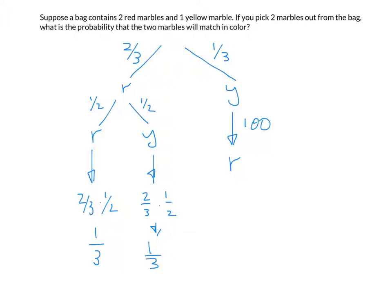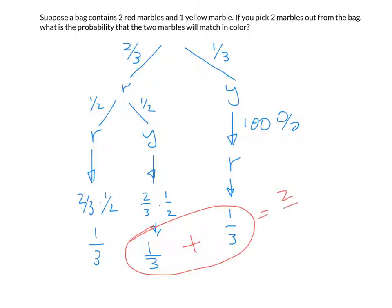Drawing yellow then red is one-third times 100%, which is one-third. Adding the two non-matching paths gives two-thirds of the time they don't match, while one-third of the time they will match with two reds. This matches intuition: with two red marbles and one yellow, it's unlikely you'll avoid drawing the yellow marble.